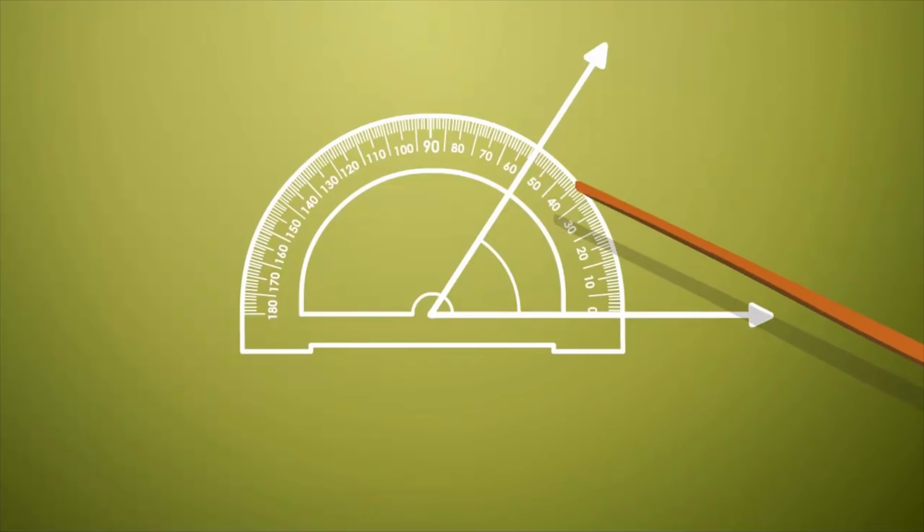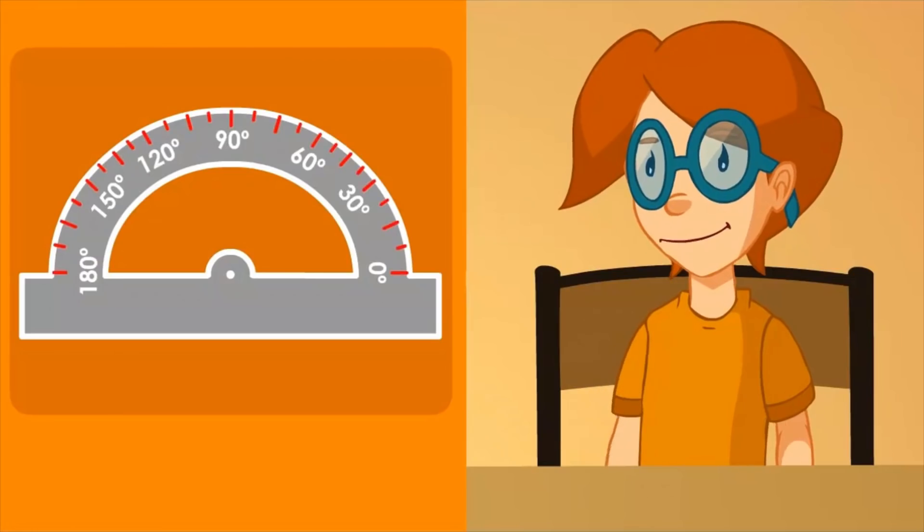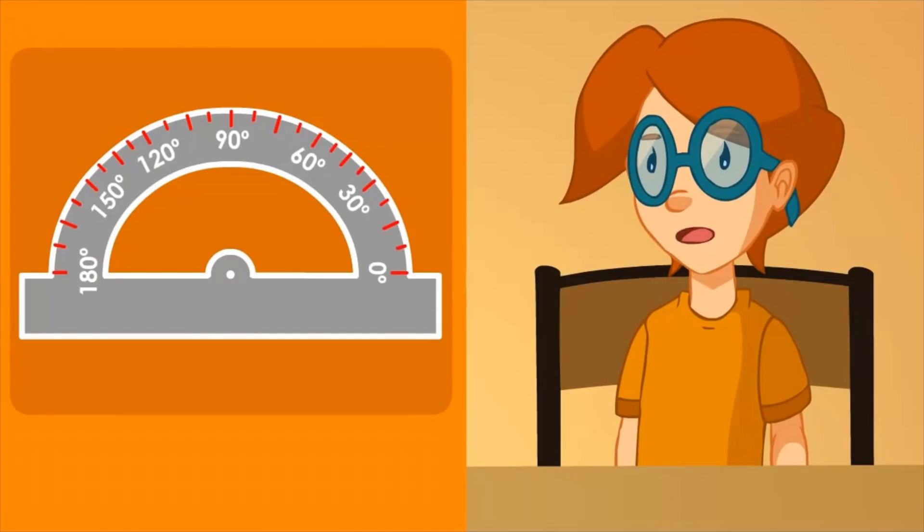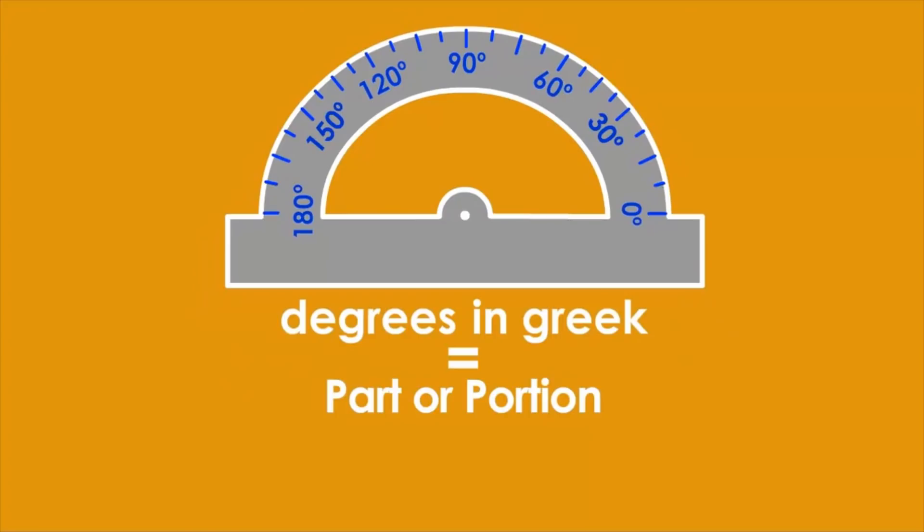The protractor helps us to measure angles and to draw them. What can you see in the round part as you've called it? Dashes all at the same distance as in a ruler. Those little dashes mark the arc degrees.